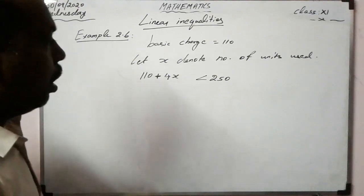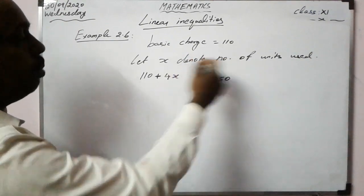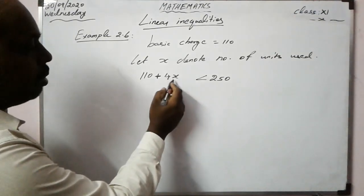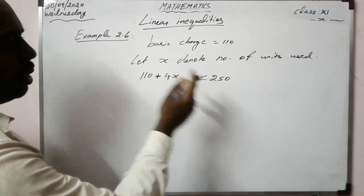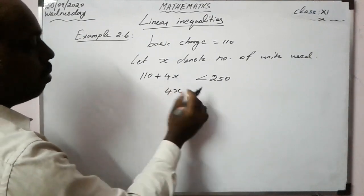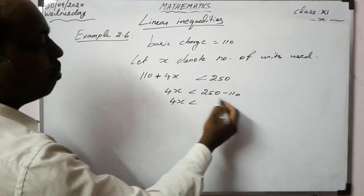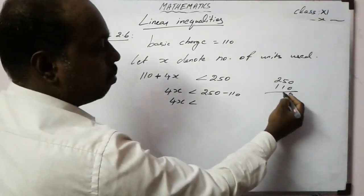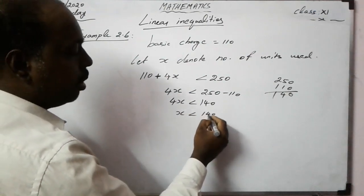We have to find the number of units used — the value of x. So: 110 + 4x < 250. Therefore 4x < 250 − 110 = 140. So x < 140/4 = 35.